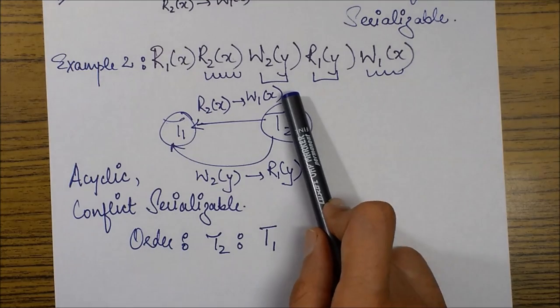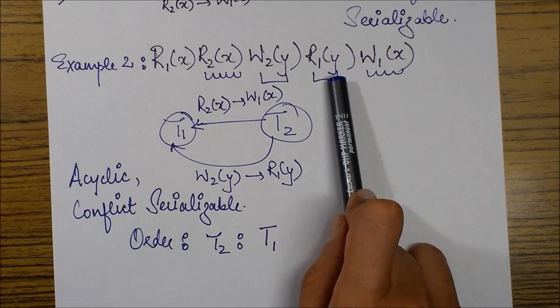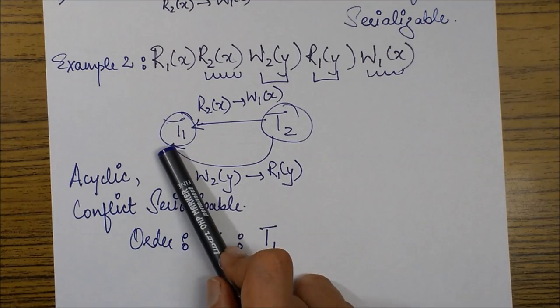Again there is another conflict pair which is W2Y and R1Y. Both the operations being performed on data item Y and the order is from 2 to 1. So again we have drawn another edge.